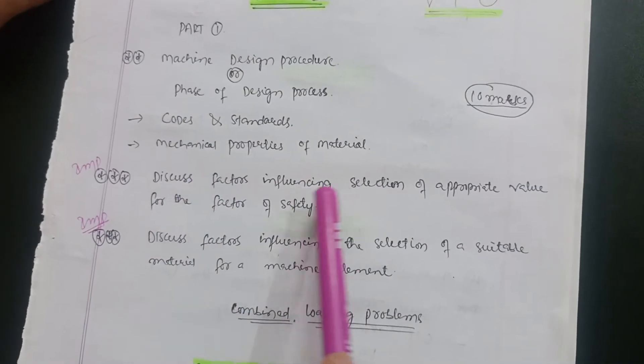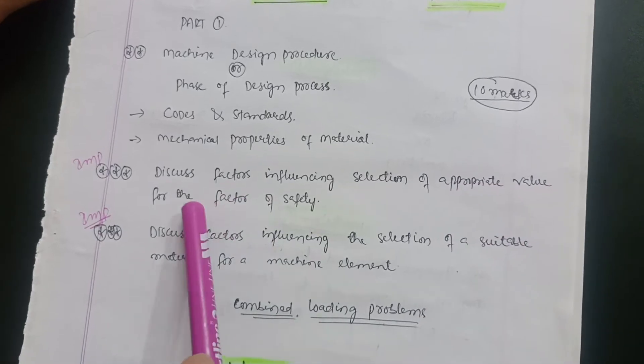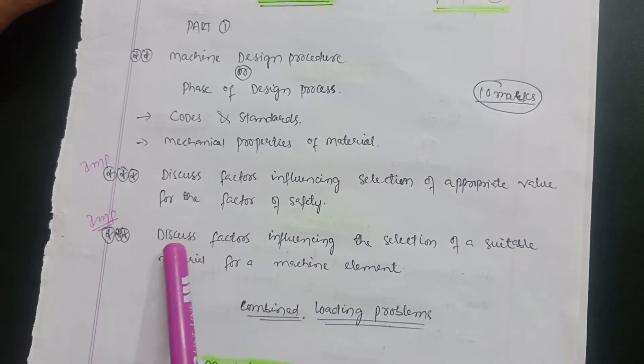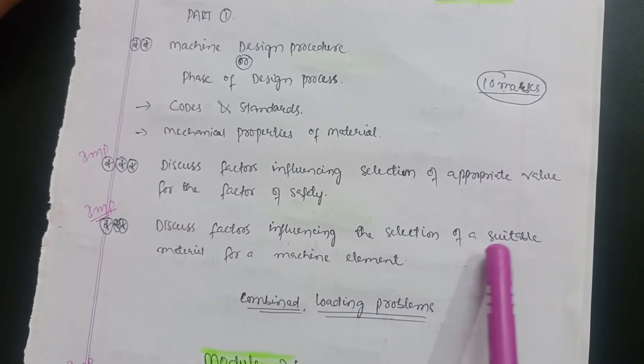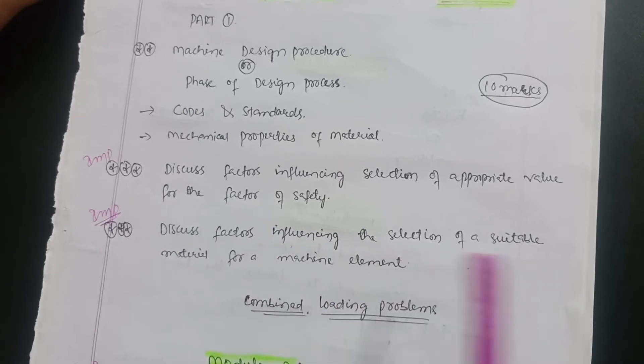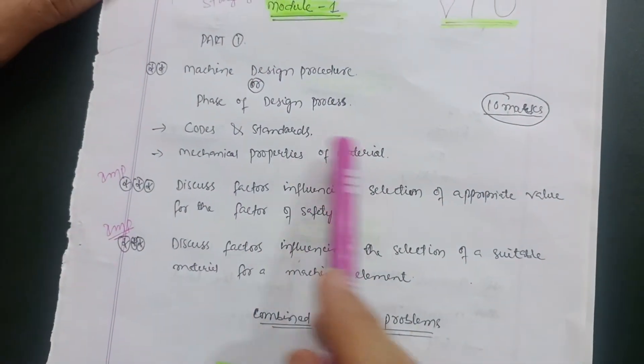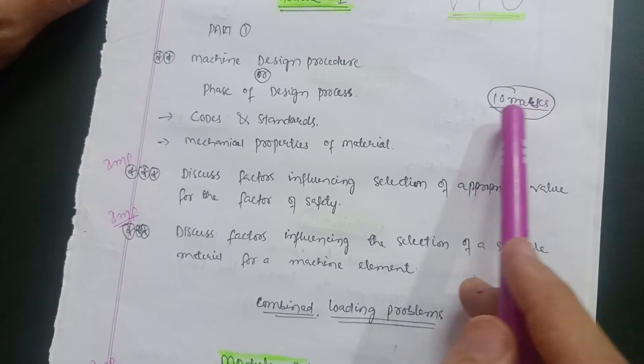Discuss factors influencing selection of appropriate value for the factor of safety, and discuss factors influencing the selection of a suitable material for a machine element. This much theory consists of 10 marks. Just prepare all the theory so that you will easily get 10 marks.